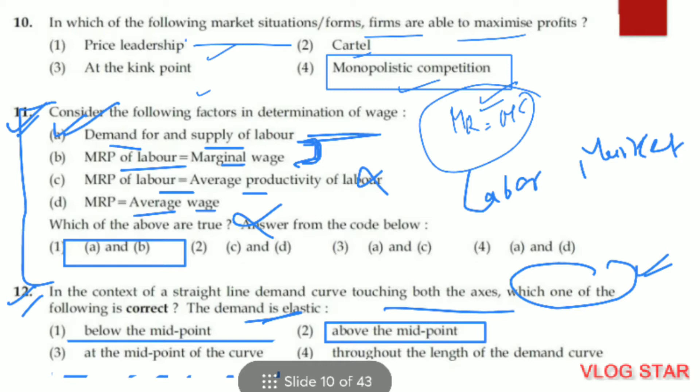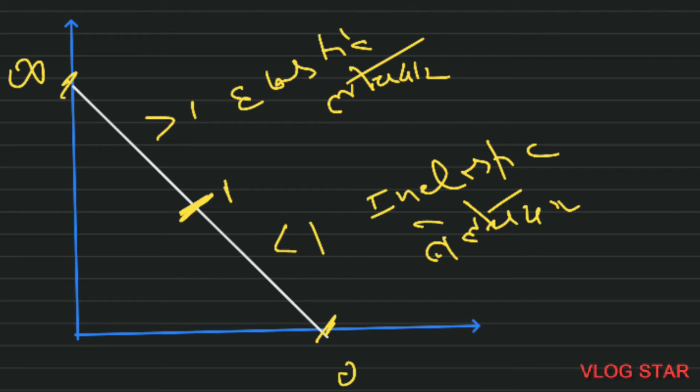Question number 12. In the context of a straight-line demand curve touching both axes, the second option — above the midpoint — is correct. On a straight-line demand curve, at the midpoint elasticity of demand equals 1. Above the midpoint, elasticity is greater than 1 — demand is elastic. Below the midpoint, from 1 to 0, demand is less than 1 — demand is inelastic.